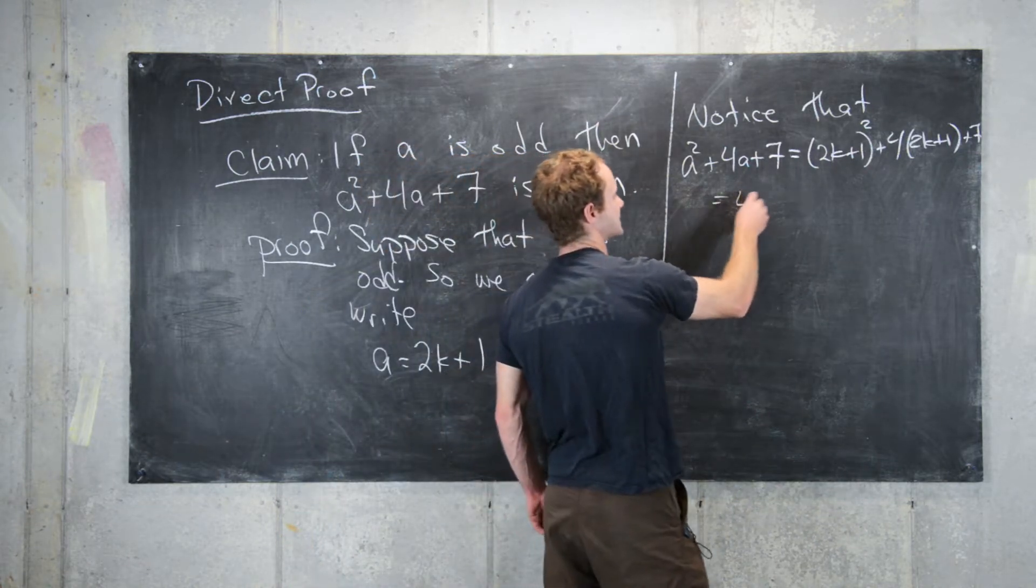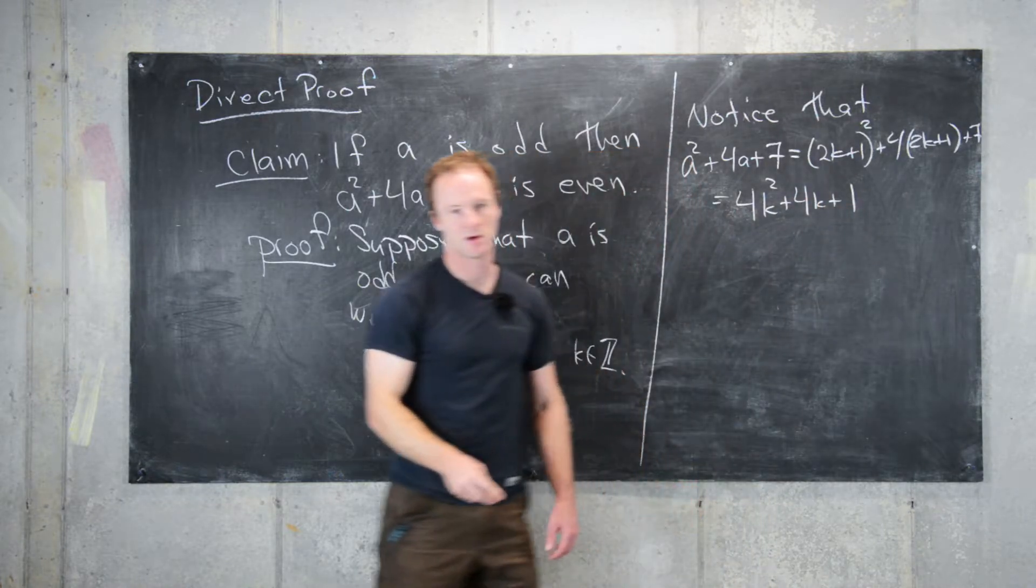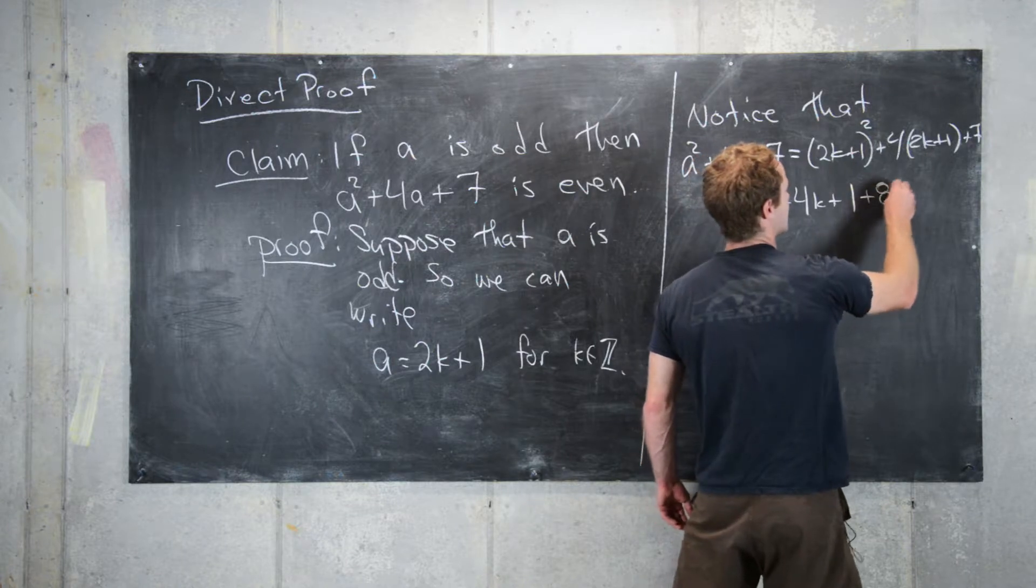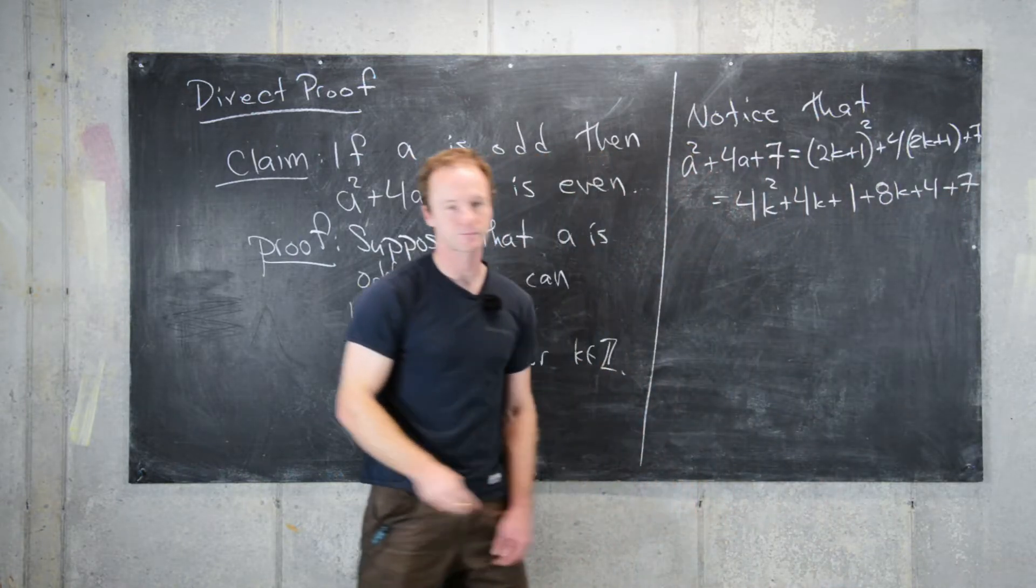That's going to give us 4k²+4k+1 from squaring that binomial, plus 8k+4+7.